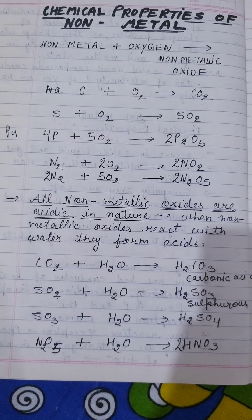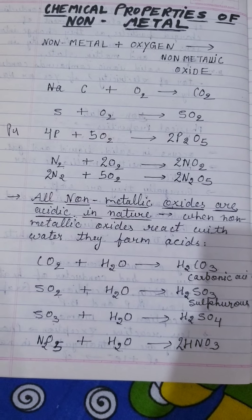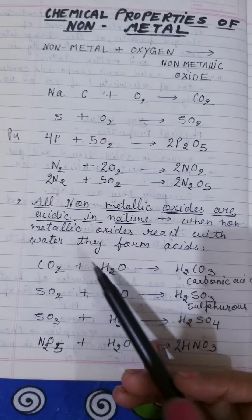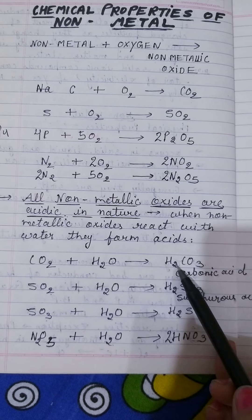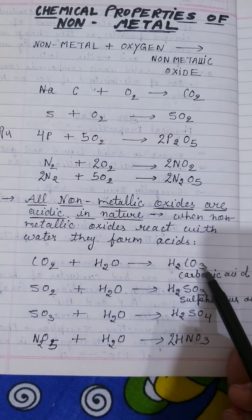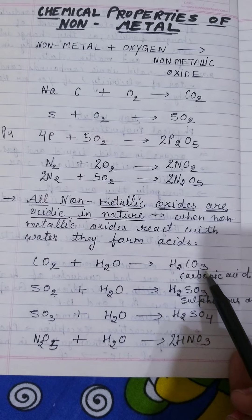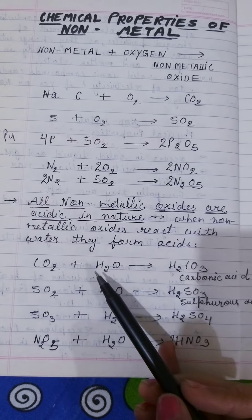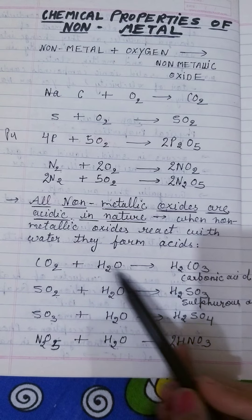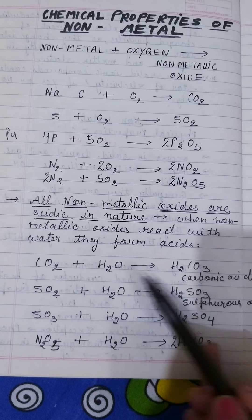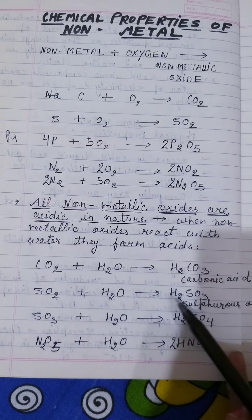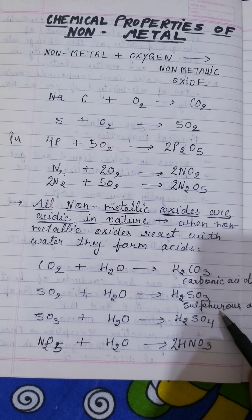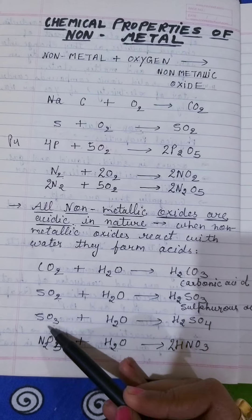Here are the reactions you need to understand. When CO₂ reacts with water it forms carbonic acid — this shows that CO₂ is acidic in nature. When SO₂ reacts with H₂O it forms H₂SO₃, which is sulfurous acid.